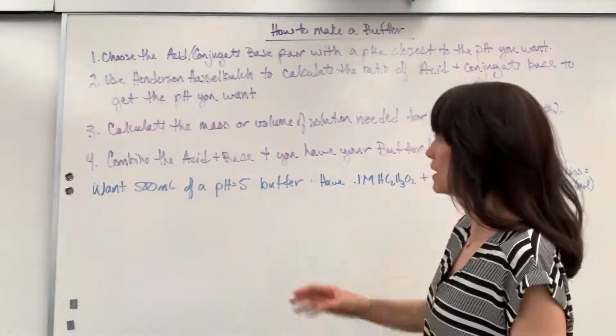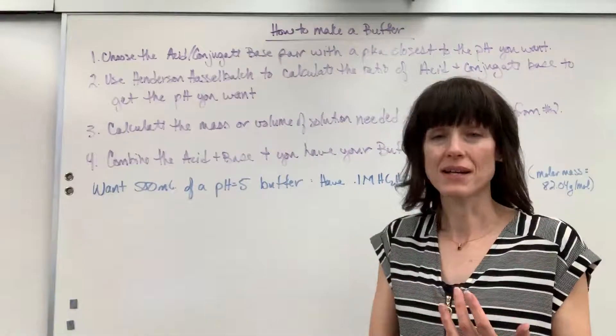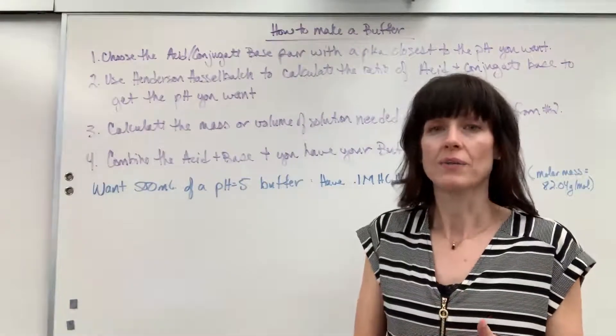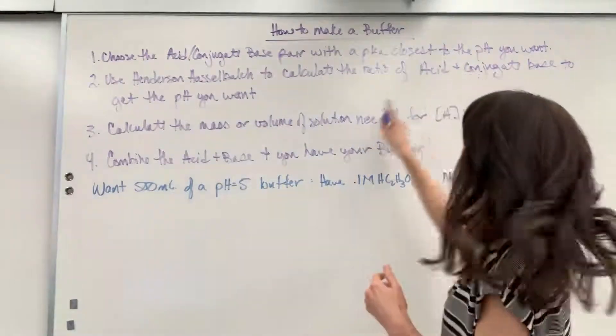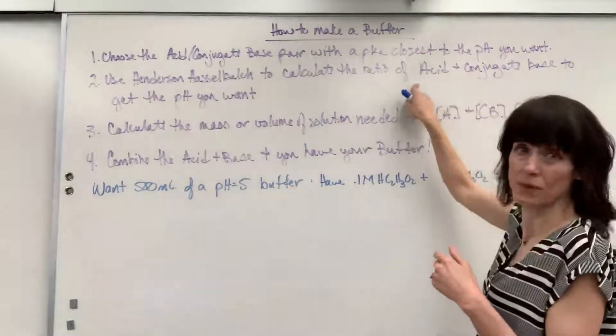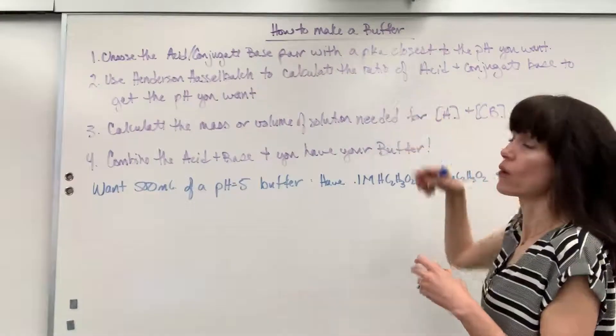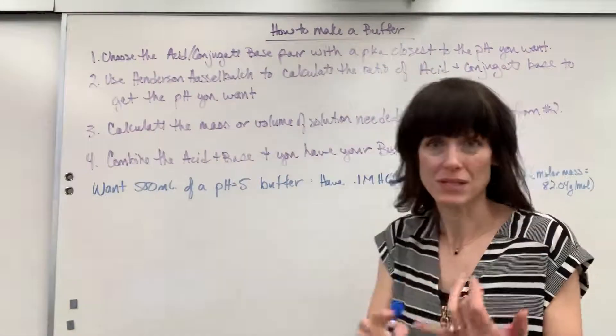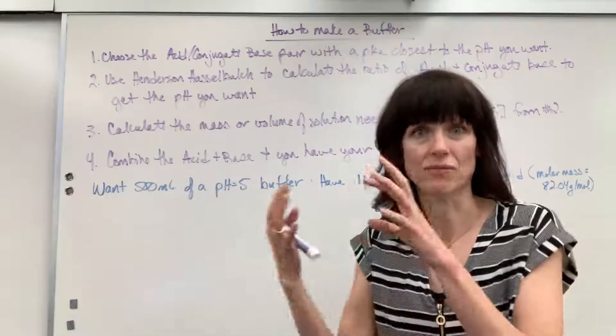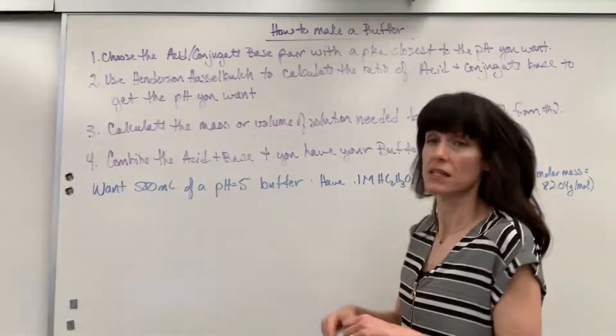Step three, you need to calculate both the mass and or volume of the acid and conjugate base pair that you need to get the ratio that we calculated from number two. So how much exactly do I need? This is the ratio, but now I need to know the volume, what's the mass of my acid and conjugate base?